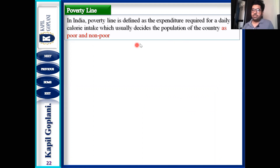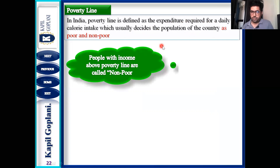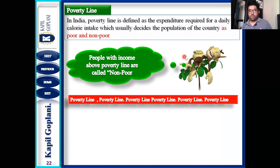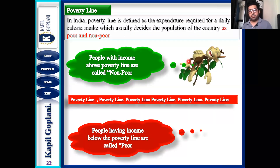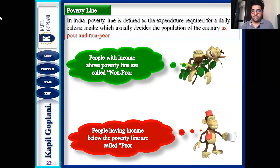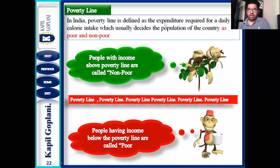In the present scenario, in India the poverty line is defined as the expenditure required for daily calorie intake, which is used to classify the population as poor or non-poor. People with income above the poverty line are called non-poor; people below the poverty line are considered poor. The detailed calculation technique will be understood in the upcoming lecture.